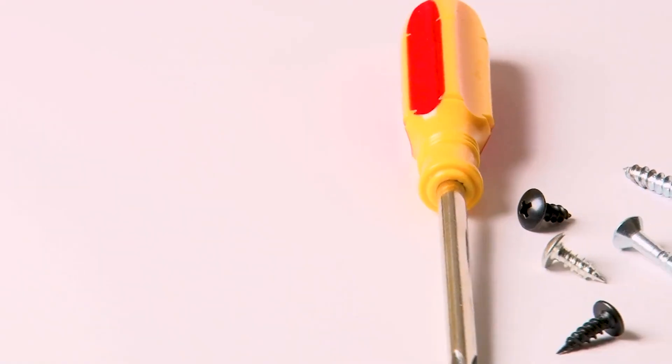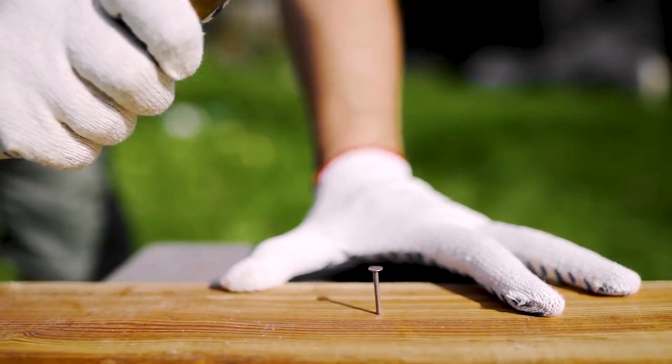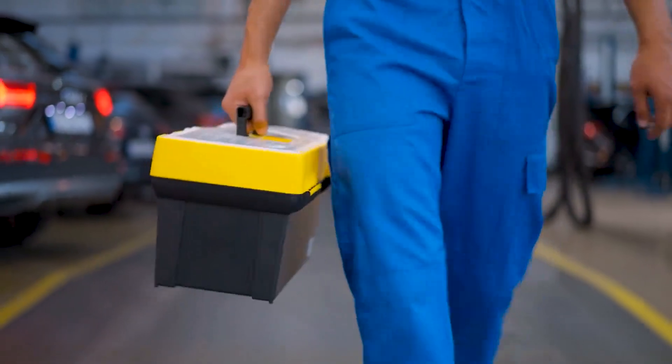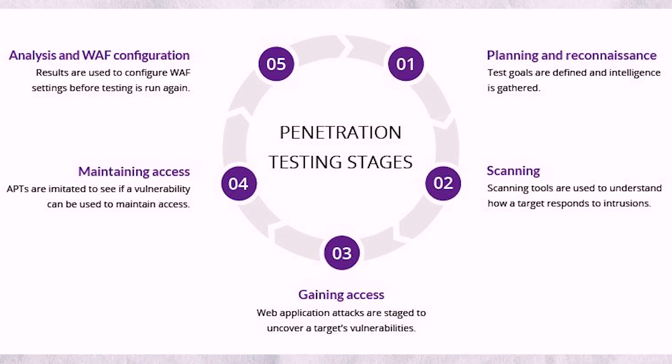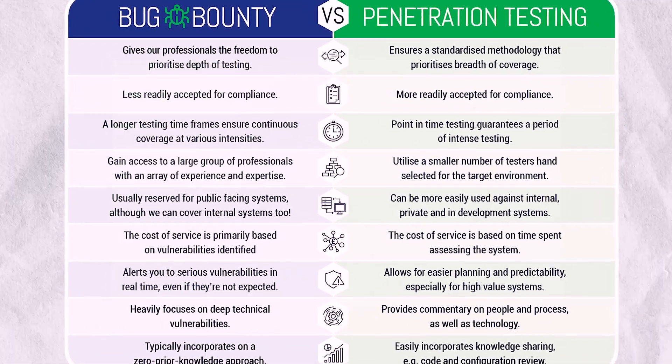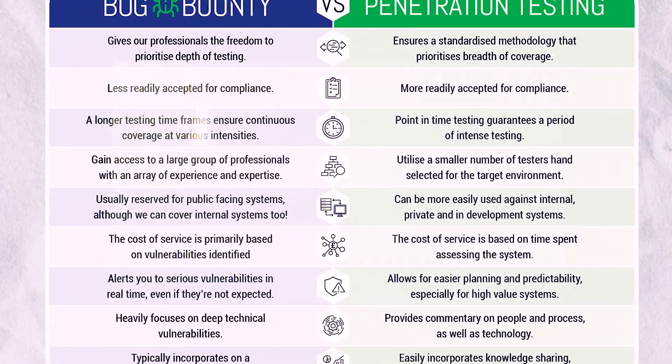But let's get something straight right off the bat — this isn't really a fight at all. Imagine if I had asked you what's the best tool, a screwdriver or a hammer? That doesn't make much sense, does it? They're not the same thing and they serve different purposes. They are complementary. You need both in your toolbox, just like you need both Pentesting and Bug Bounty in your AppSec Toolkit. So let's dive in and compare these two essentials of application security.